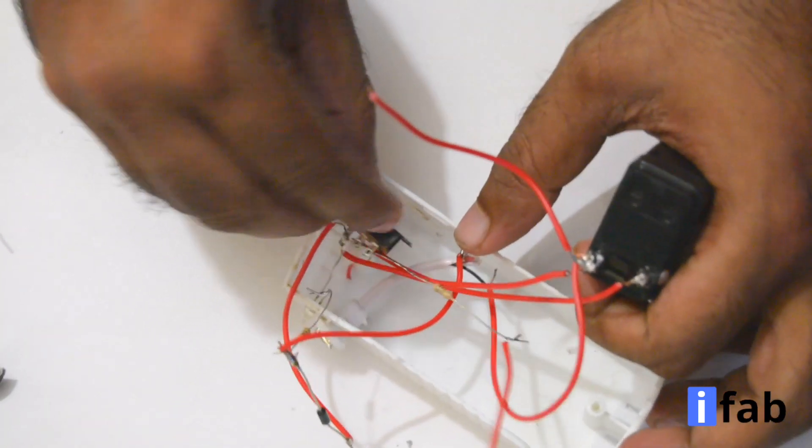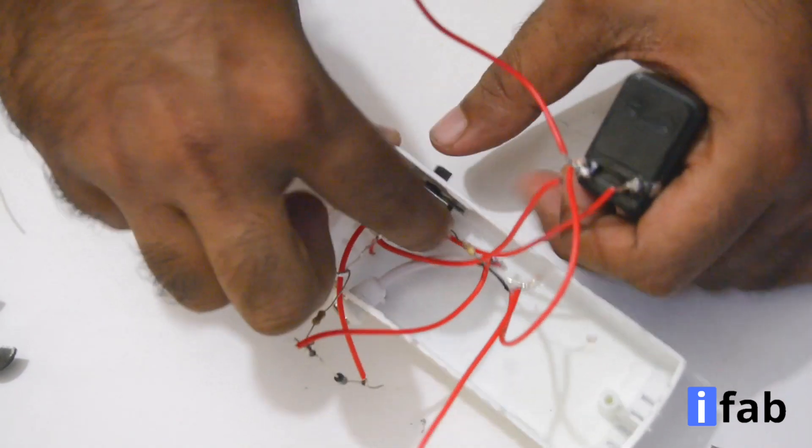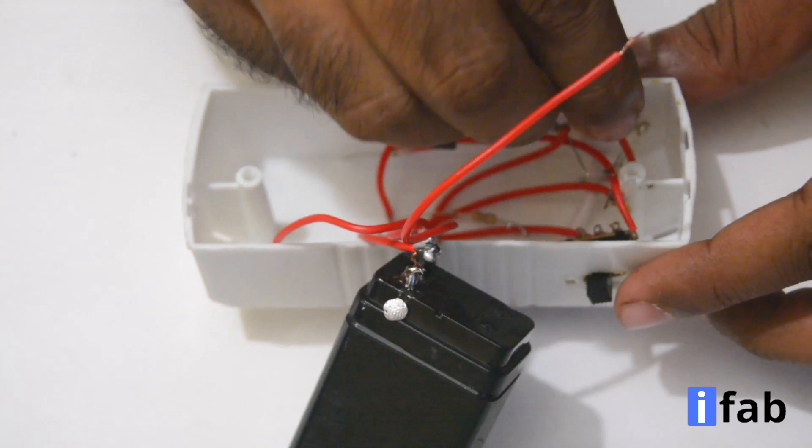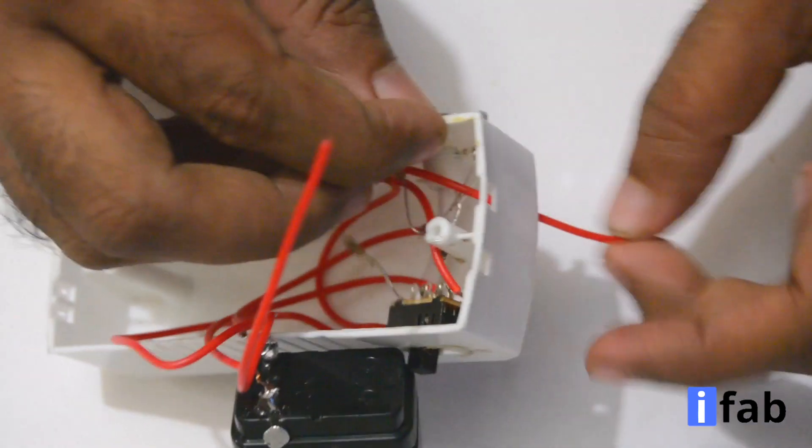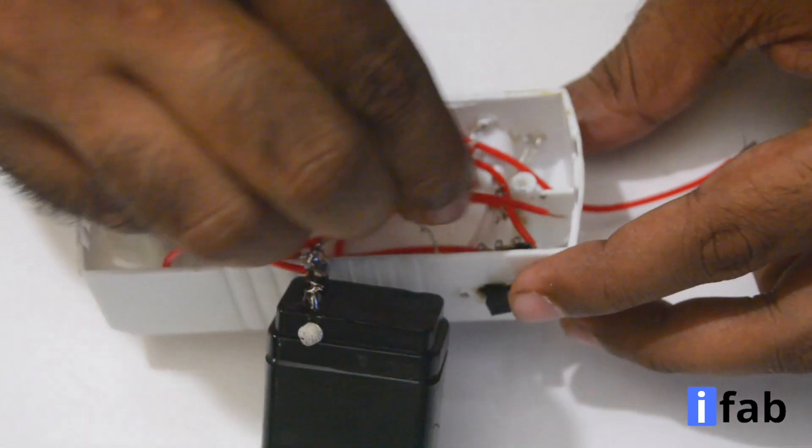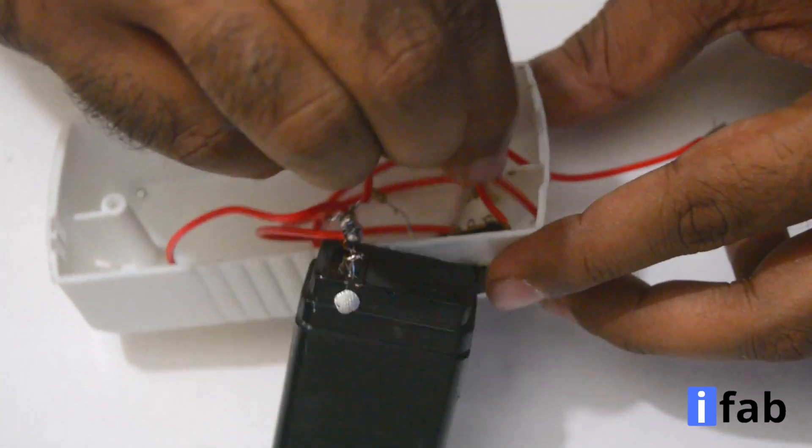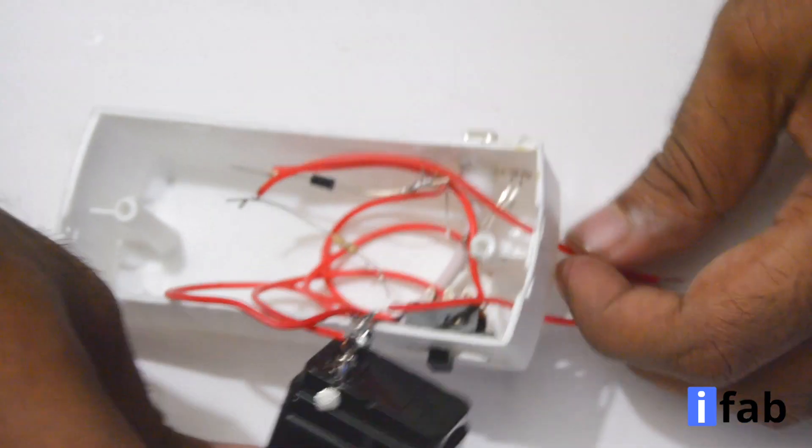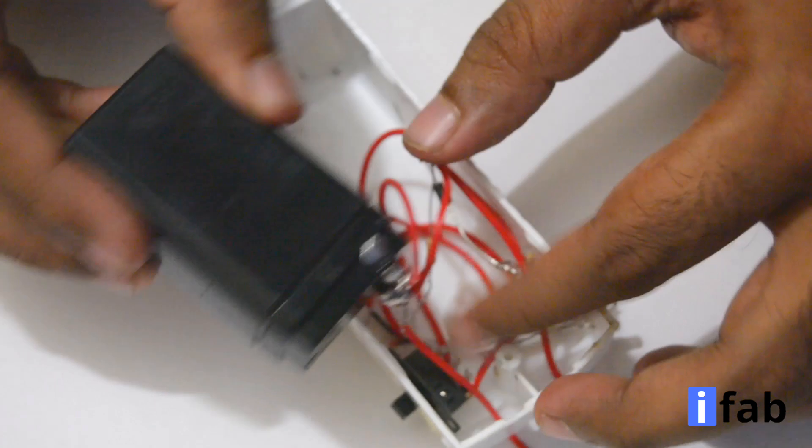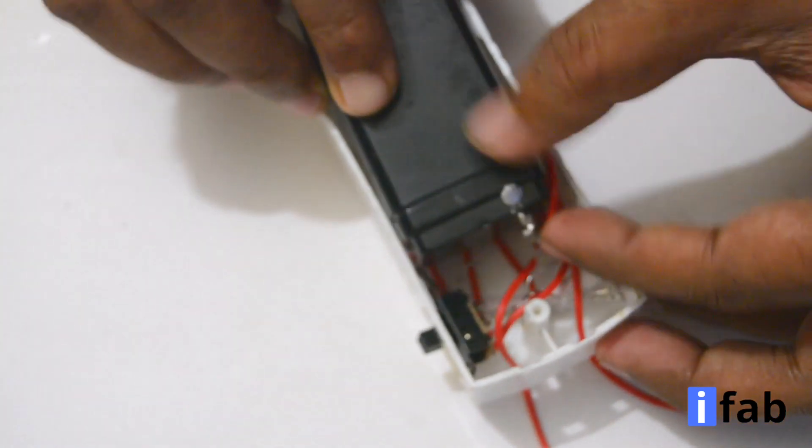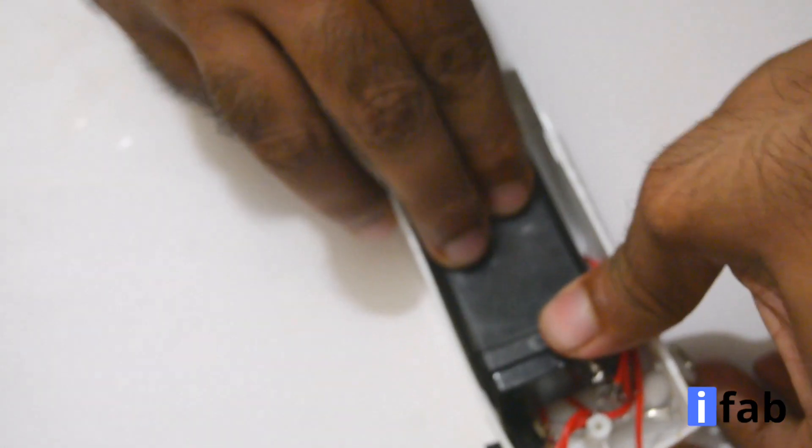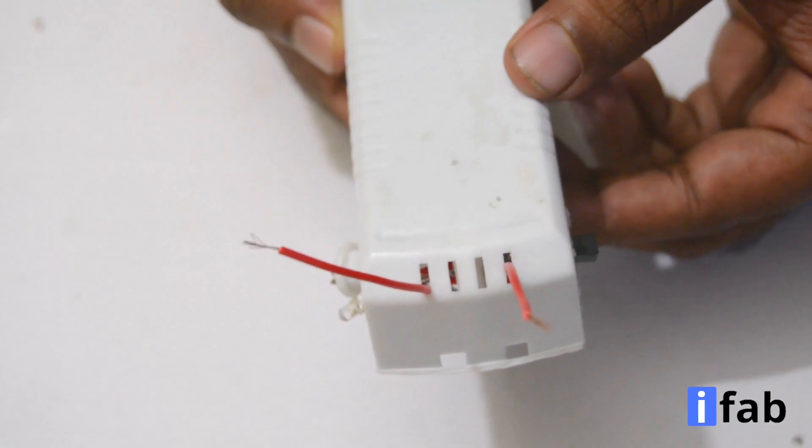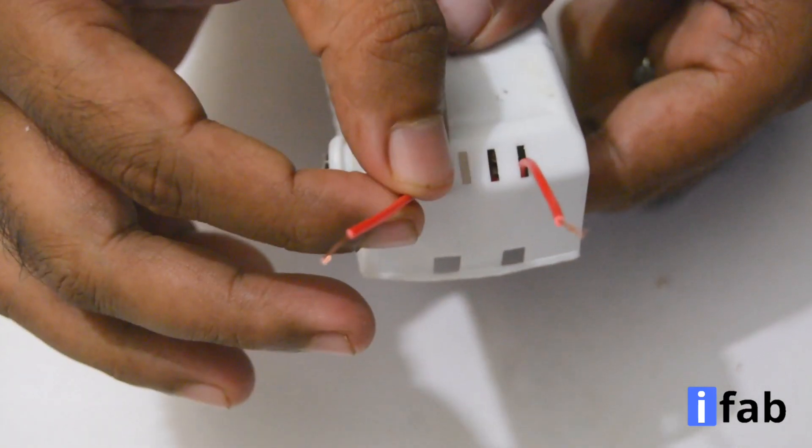Now it's time to place the components inside the case. You have two terminals positive and negative, take them out from the case. Now place the components properly inside the case and make sure that no leads get shorted. This is your positive terminal and this is the negative one.